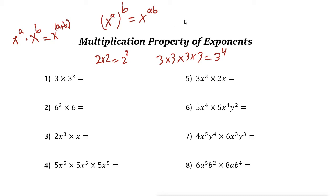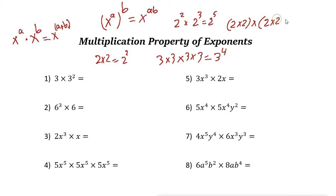Let's look at some examples to learn the logic behind this. For example, multiply 2 squared times 2 to the power of 3. Based on this rule, we add the powers, so it is 2 to the power of 5. If you think about it: 2 squared is 2 times 2, and 2 to the power of 3 is 2 times 2 times 2. Now 2 is multiplied by itself — how many 2's do we have? Five. So 2 squared times 2 cubed equals 2 to the power of 5.